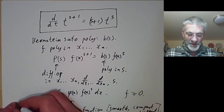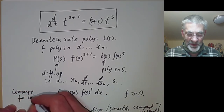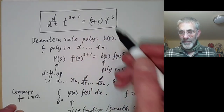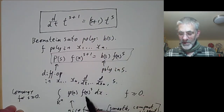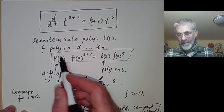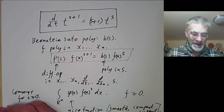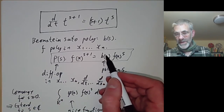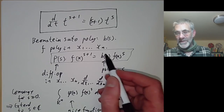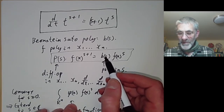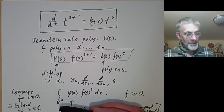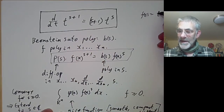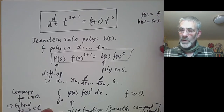If φ is smooth and of compact support, you can write down this integral, though you can often do it even if φ is a bit more complicated. For a very simple example, if you take f(s) = t, then b(s) might be s+1. Let's look at a slightly more complicated example in several variables.